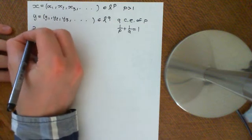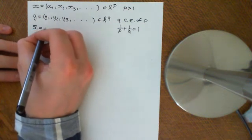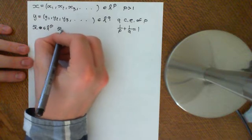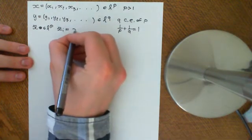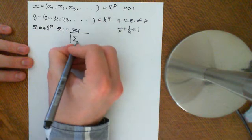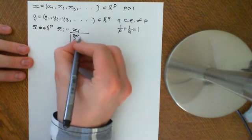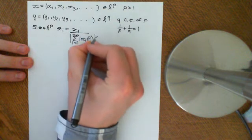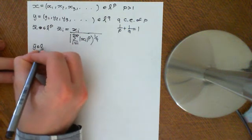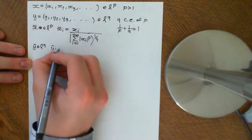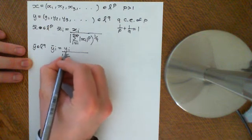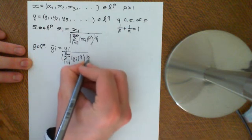Then what we did is we defined x̄ to be a sequence — we showed it was also an element of LP — where each component x̄ᵢ is the corresponding component from the original sequence x divided by the normalising constant, which is the sum from i equals 1 to infinity of |xᵢ|^P, all to the power of 1 over P. And then ȳ, an element of LQ, was defined as ȳᵢ equal to yᵢ divided by the equivalent normalising constant: the sum from i equals 1 to infinity of |yᵢ|^Q, to the power of 1 over Q.